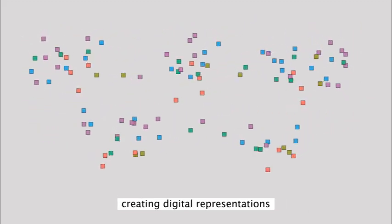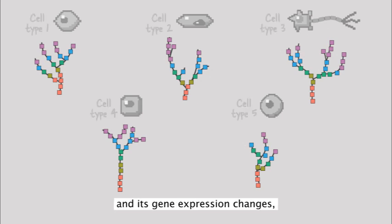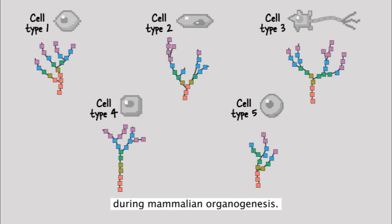This creates digital representations of how each cell type develops and its gene expression changes during mammalian organogenesis.